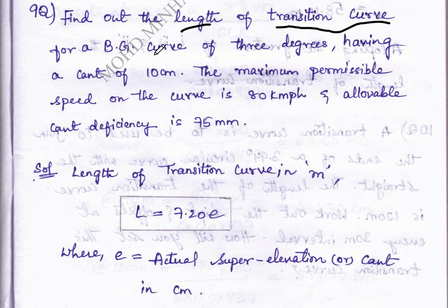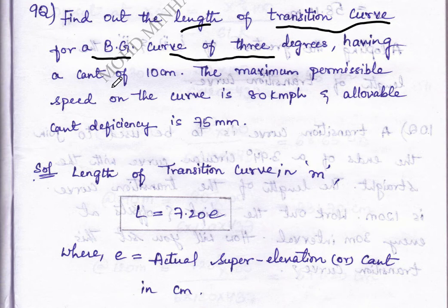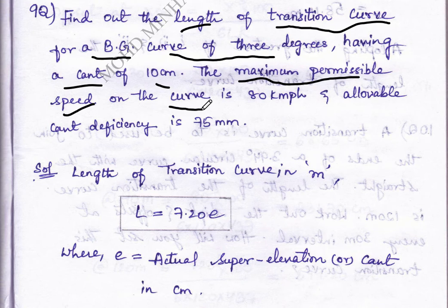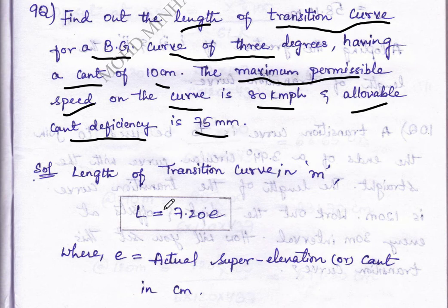We have to calculate the length of transition curve for BG, and a curve of three degrees is given which has a cant of 10 centimeters. The maximum permissible speed on the curve is 80 kilometers per hour and the allowable cant deficiency is 75. Now we will start with the solution.